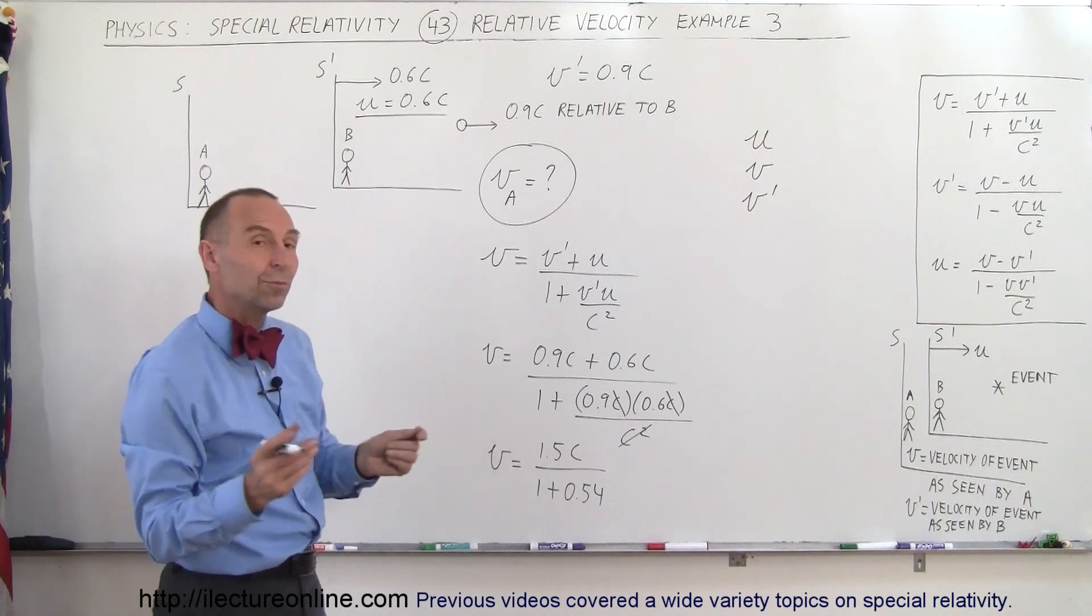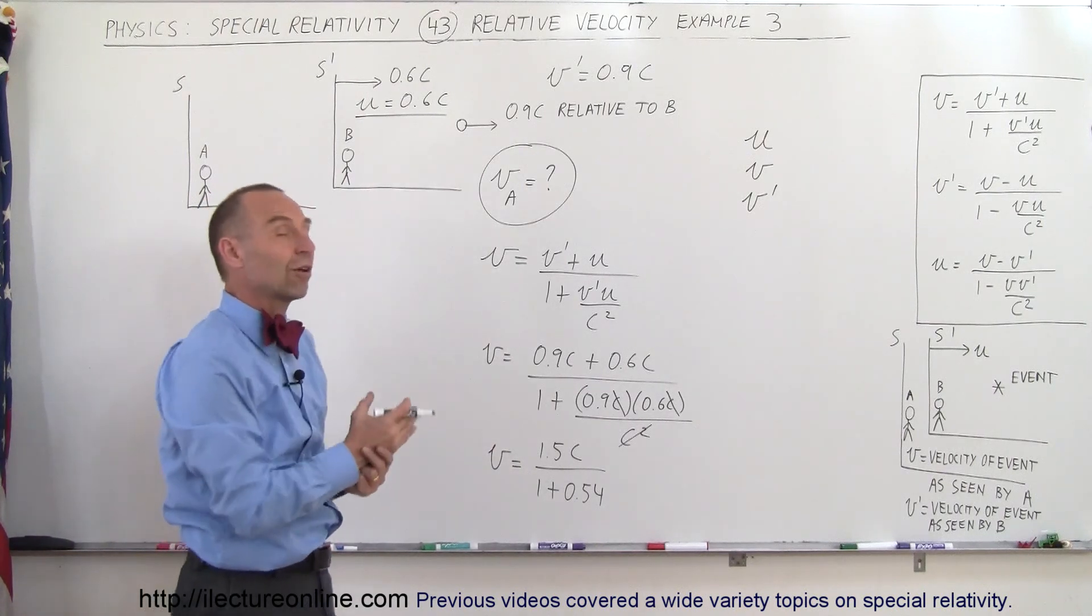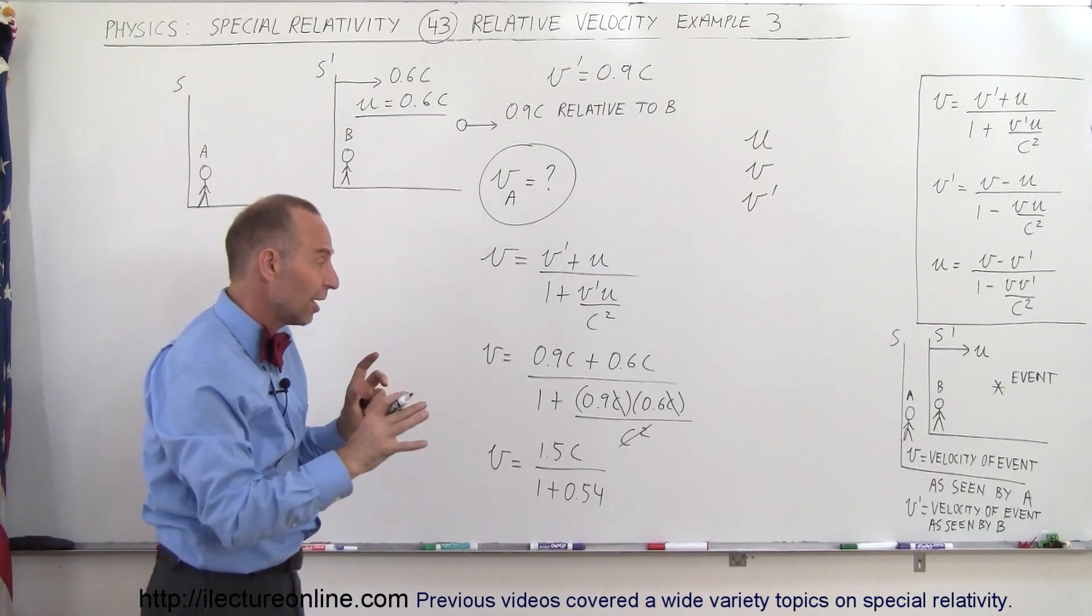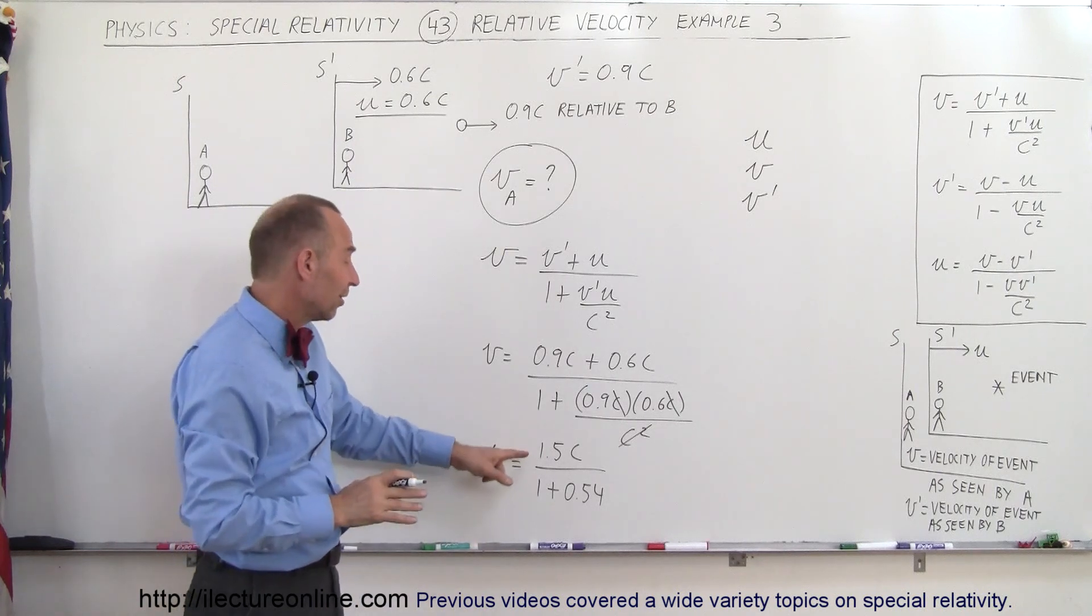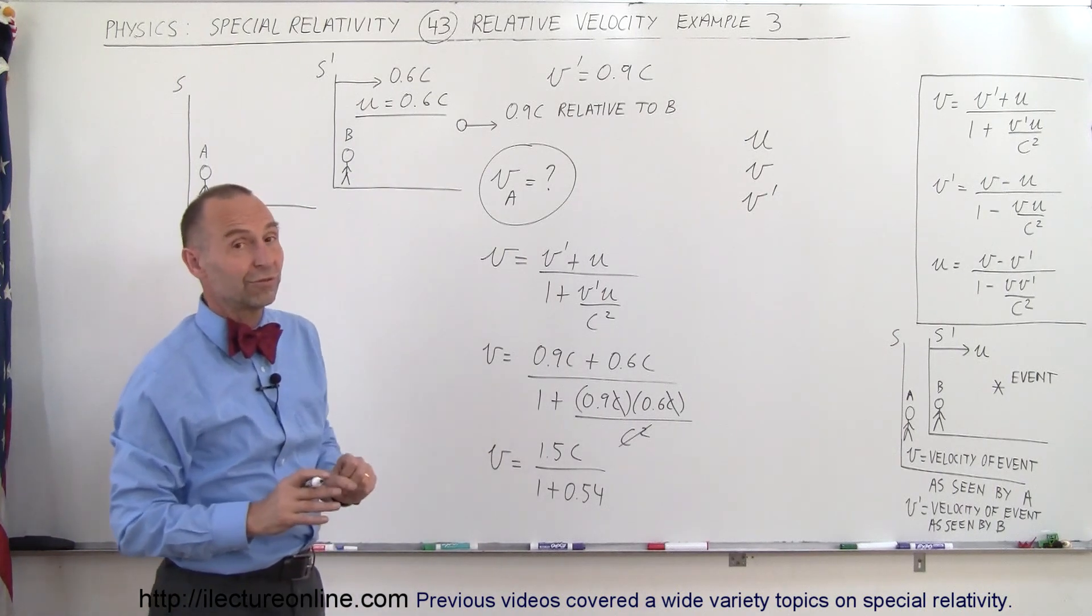Notice again that the numerator is a number bigger than C because that would be what we call the Galilean transformation. If we do not take into account the relativistic changes, then the velocity would seem to be 1.5C.